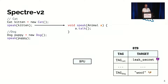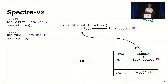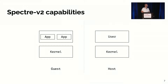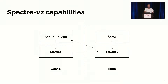Now when the cat class calls the speak method again, the CPU will start speculating and will see that the valid entry for this tag is the leak secret function, so it will speculate to it. Clearly this happens in the speculative domain — eventually it will go back to execute meow — but this still allows an attacker to leak sensitive data by making other code execute this function.